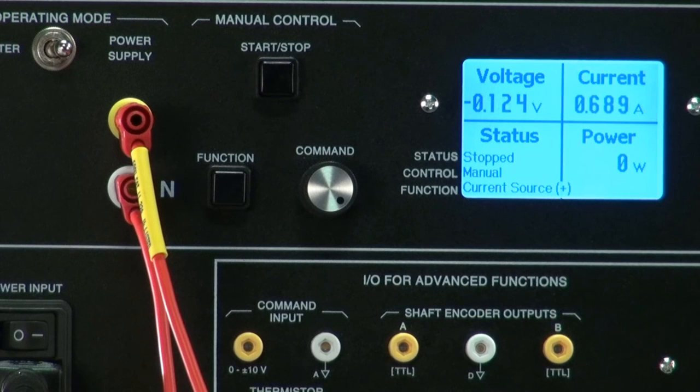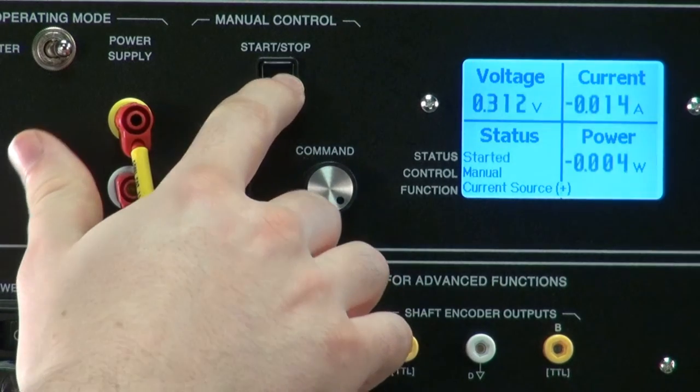Positive current source. This function supplies a DC current from 0 to 5 amps at the output. The value of the current supplied is adjusted by the user right here.